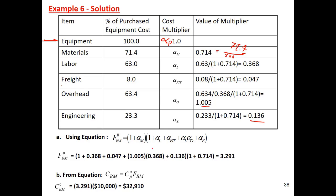You can continue the calculation for the last one, engineering, and get that value. Now you have all the factors: alpha_M, alpha_L, alpha_FIT, alpha_O, and alpha_E (engineering). Put all the factors into the bare module equation. Alpha_M is the calculated value, alpha_L is here, alpha_FIT is 0.0447, alpha_L overhead is this value, and finally engineering. Putting them all together gives you the bare module factor FBM0.